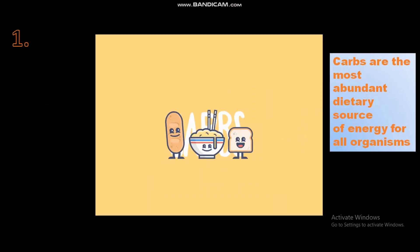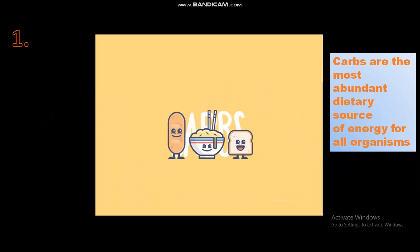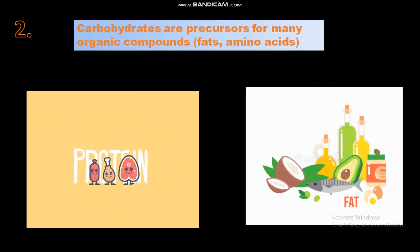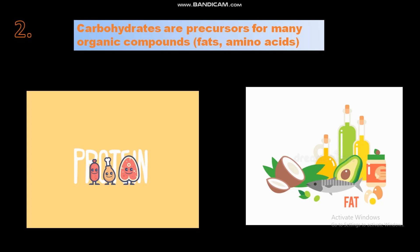Now let's talk about functions of carbohydrates. Carbohydrates participate in a wide range of functions in the body. They are the most abundant dietary source of energy for all organisms, widely available in our diets. Carbohydrates are also precursors for many organic compounds, including fats and amino acids, and help in the natural synthesis of proteins and fats inside the body.